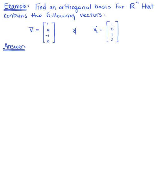Find an orthogonal basis for R4 that contains the following vectors. We have vector v sub 1, which is (1, 4, -1, 0), and vector v sub 2, which is the vector with components (1, 0, 1, 2).